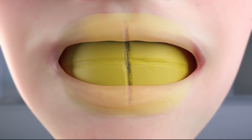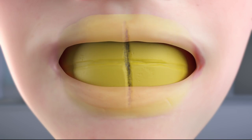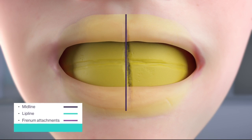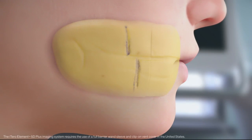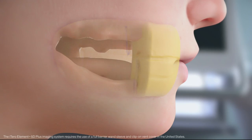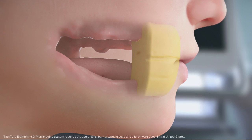Instruct the patient to close slowly. Once vertical dimension has been established, mark the midline, lip line, and frenum attachments. Trim and place the matrix at the anterior lining up the landmarks. Leave the contralateral putty in place when scanning the bite.